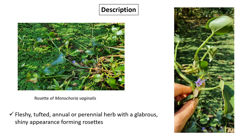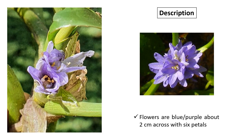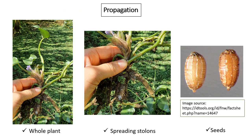It is a fleshy, tufted, annual or perennial herb with a glabrous or smooth, shiny appearance forming rosettes. Leaves are narrow and lanceolate initially, later developing into broad, caudate, hastate bases. The flowers are blue or purple, about 2 cm across with 6 petals.